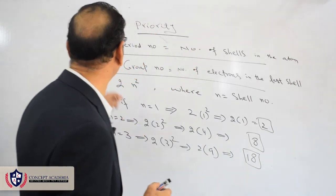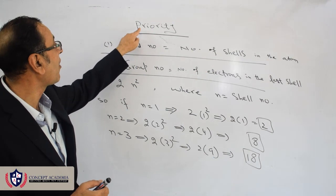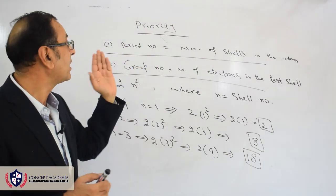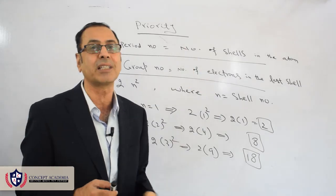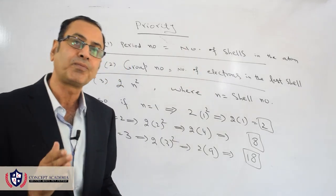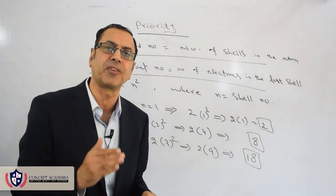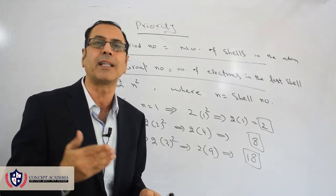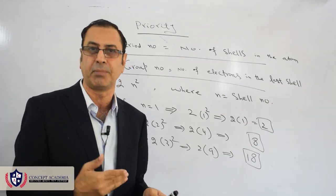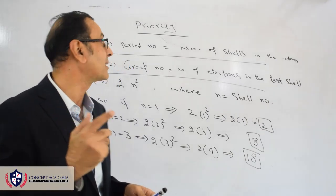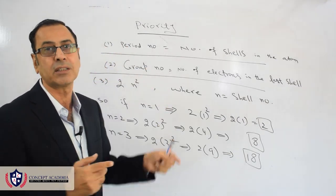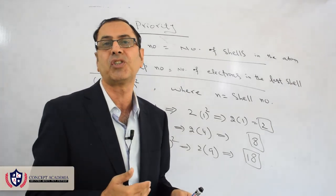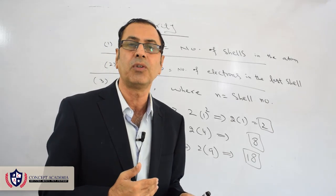Point number one has priority number one, and that is the period number. The period number tells us the number of shells in the atom. For the atom whose electronic configuration I would like to make, I must first look at which period number it belongs to — this is priority number one.